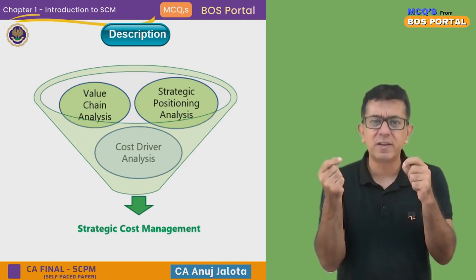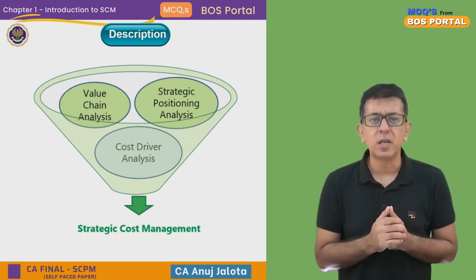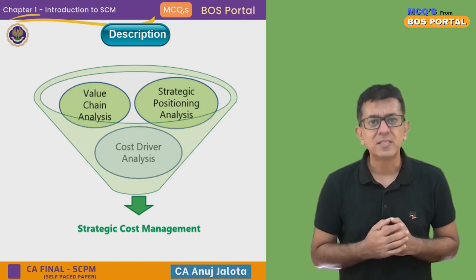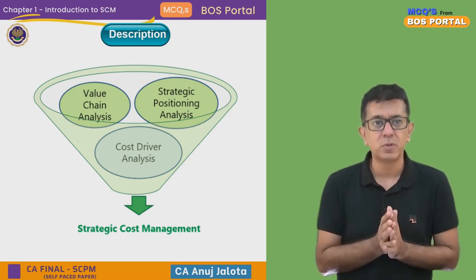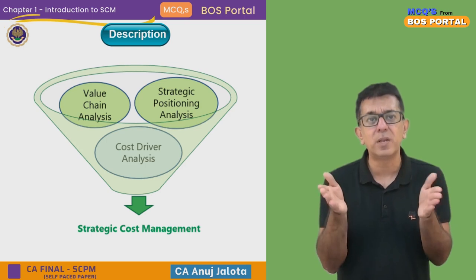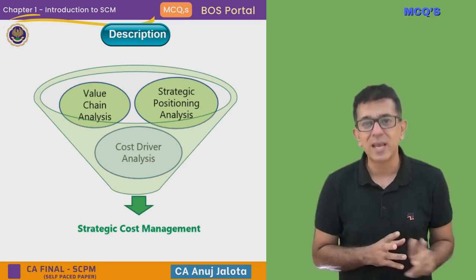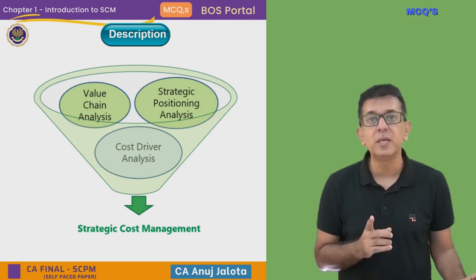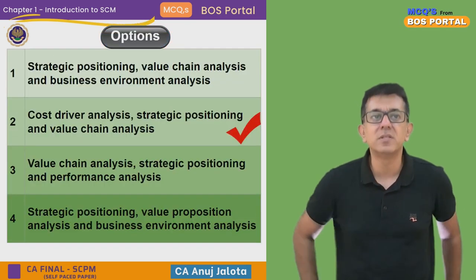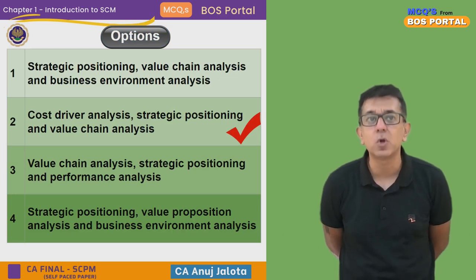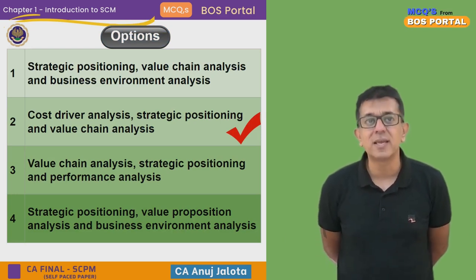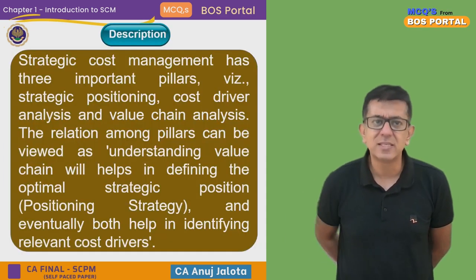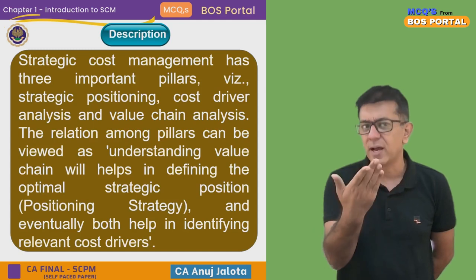The third pillar is cost driver analysis. Every cost is incurred because of some underlying factor. For example, ordering cost is incurred because you place an order; setup cost is incurred because you set up the machines. These are the three pillars of SCM. Therefore, the correct answer should be option B — cost driver analysis, strategic positioning, and value chain analysis. That is the correct answer as given by ICAI.